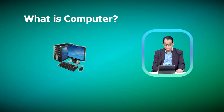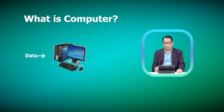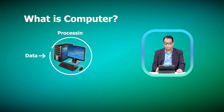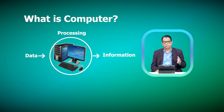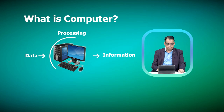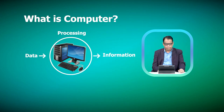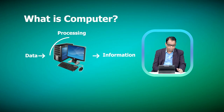A computer is basically a digital machine that carries out various tasks. The computer system takes data as input, processes it, and produces output which can be information. So whenever we have raw data, we can process it using a computer system and generate useful information at the output. Whenever we think of any computer system, we can think of five functions associated with it.